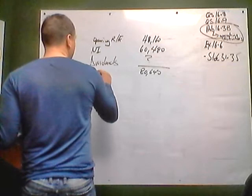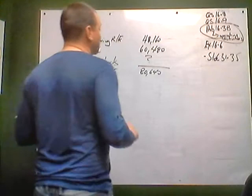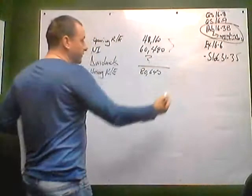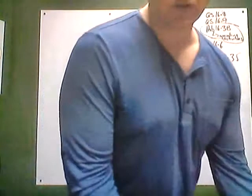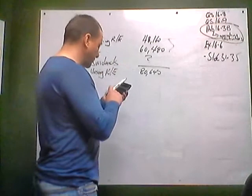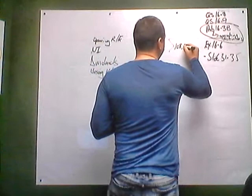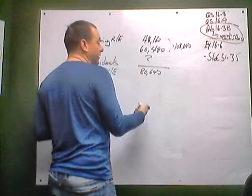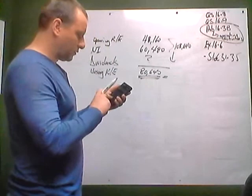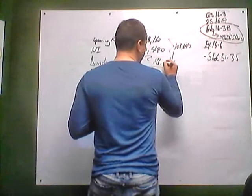Our closing or ending retained earnings were $80,640. So how do we go from $48,160 plus $60,480 — that has to be $108,640 — down to $80,640? Well, it's because we paid out a dividend. So $108,640 minus $80,640 means we must have paid dividends of $28,000.